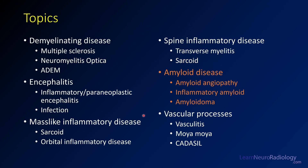We've covered a couple of other topics throughout this lecture, including demyelinating disease, causes of encephalitis, sarcoid and orbital inflammatory disease, and most recently, spine inflammatory disease. Today, we're going to focus on the manifestations of amyloid that you see within the CNS. And on the next lecture, we'll wrap up this entire lecture with the coverage of some vascular processes, such as vasculitis, Moyamoya, and CADASIL. If you haven't checked out these other lectures, you might go ahead and check them out now.